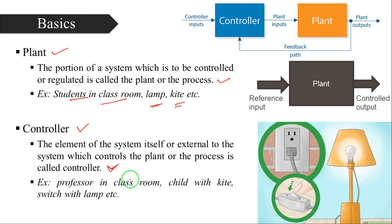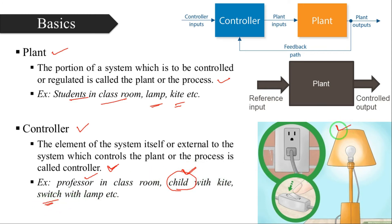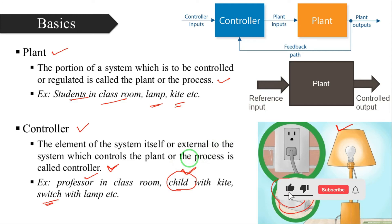In a classroom, the professor is the controller. Like child with kite — the child is controlling the kite, so the child is called a controller. Switch with lamp — the switch is the controller. For example, you can control the fan speed using a regulator. We can regulate or control the speed of the fan by using the regulator.